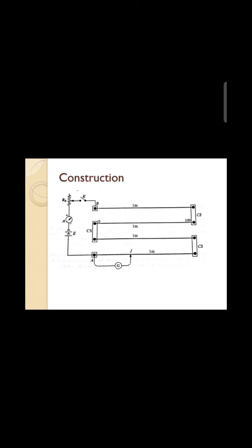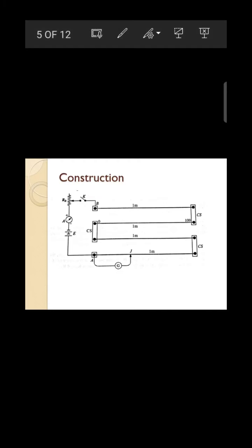In the construction of the potentiometer, copper strips are used with a one-meter wire stretched in between. Using a jockey, zero deflection in the galvanometer is noted. A detailed explanation video is provided in the description box.